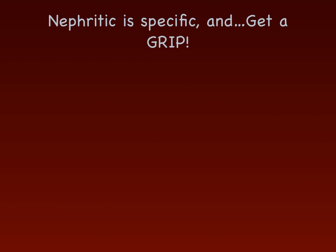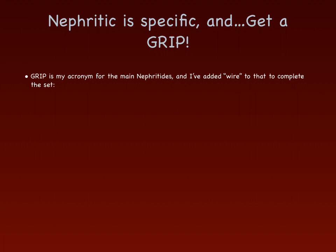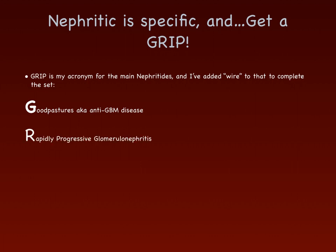Nephritic is specific — and remember the acronym GRIP for the main nephritides. The R part, rapidly progressive glomerulonephritis, is actually an overarching umbrella descriptor; any nephritic syndrome or even damage to the glomeruli can become RPGN. G is Goodpasture's, also known as anti-GBM disease. R is rapidly progressive glomerulonephritis. I is IgA nephropathy. P is post-streptococcal glomerulonephritis.